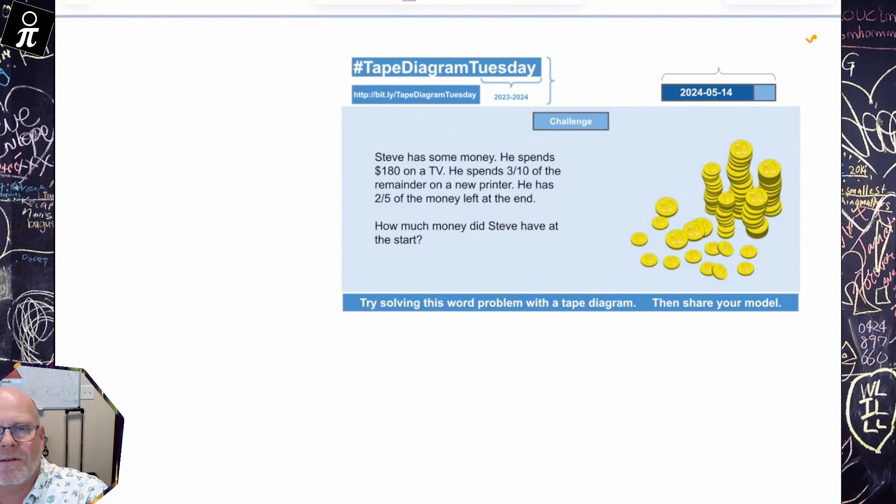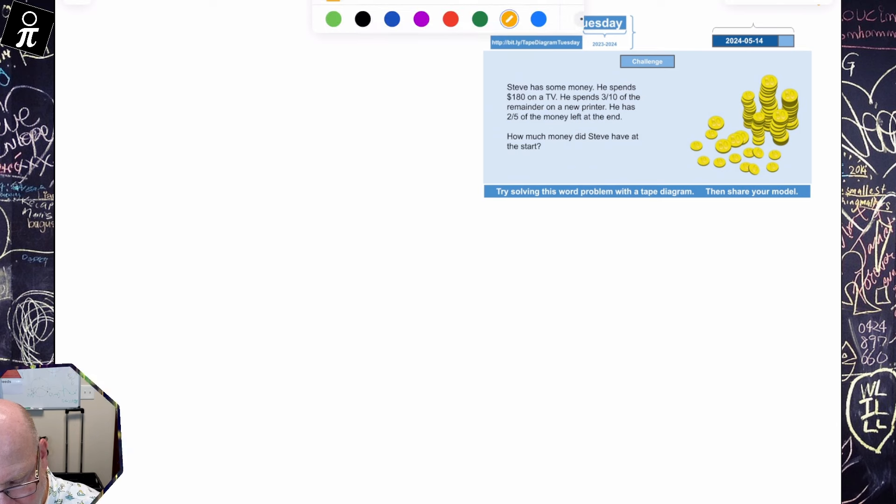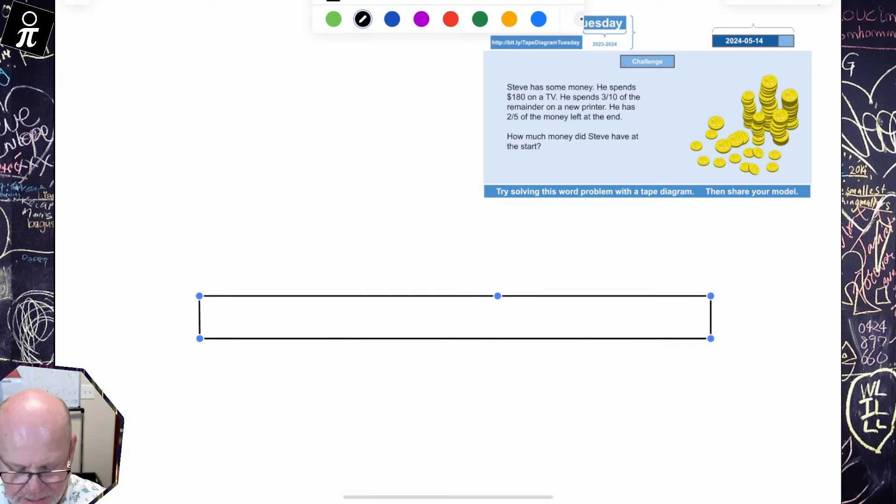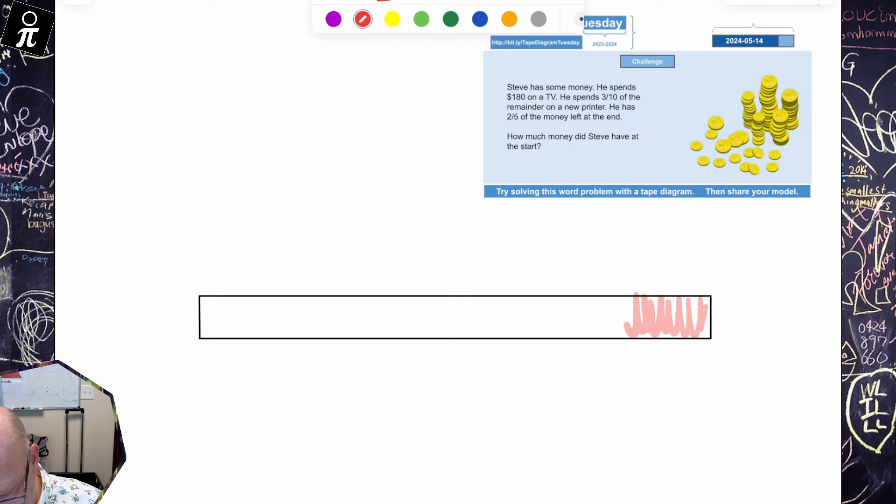So the challenge is saying, Steve has some money. He spends $180 on a TV. He spends three tenths of the remainder on a new printer. He has two fifths of the money left at the end. So how much money did Steve have at the start? So let's start with this feels like a one tape problem. So there is my one tape. And it says Steve has some money. Well, there it is there. It's I just laid it out on the tape diagram. He spends 180 of it on TV.